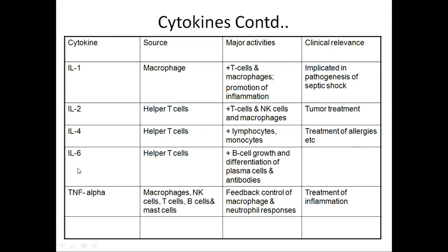Interleukin-6 is secreted by helper T cells and is involved in B cell growth and differentiation of plasma cells and antibodies. Tumor necrosis factor alpha is secreted by macrophages, natural killer cells, T cells, B cells, and mast cells. It is involved in the feedback control of macrophage and neutrophil responses, and is used in the treatment of inflammation.